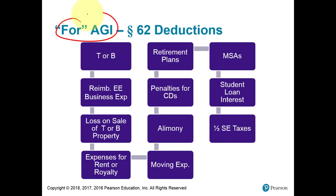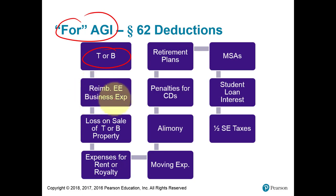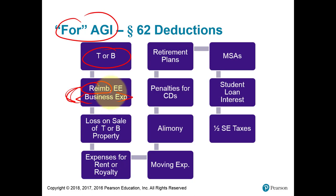Here are some samples of for-AGI type deductions. That trade or business type again under Section 162. Or here is an unusual one that may not even show up on a tax return: if you get a reimbursement from your employer — the employer paid the employee and the employee had paid out business expenses — the expense and the income cancel out each other. The effect is like a deduction for AGI, and AGI is not reflecting that income or that deduction.